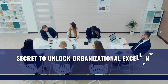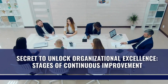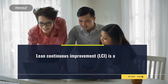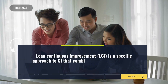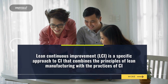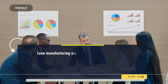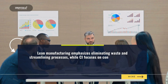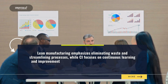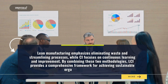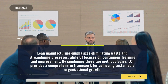Secret to Unlock Organizational Excellence. Lean Continuous Improvement, or LCI, is a specific approach to CI that combines the principles of lean manufacturing with the practices of continuous improvement. Lean manufacturing emphasizes eliminating waste and streamlining processes, while CI focuses on continuous learning and improvement. By combining these two methodologies, LCI provides a comprehensive framework for achieving sustainable organizational growth.